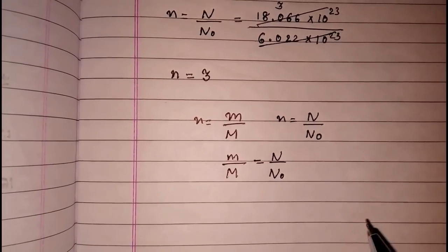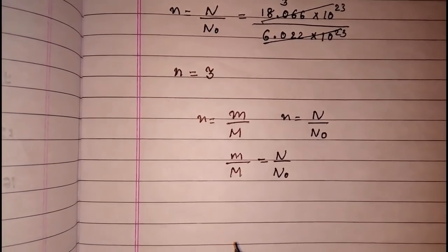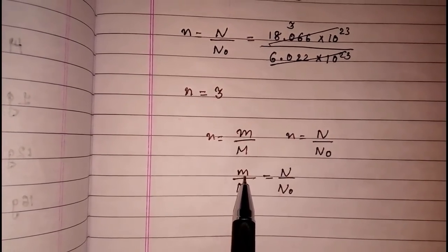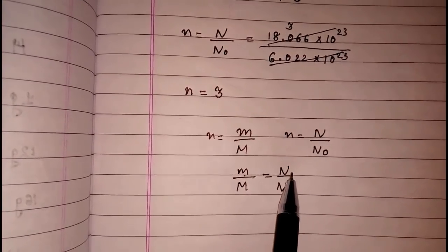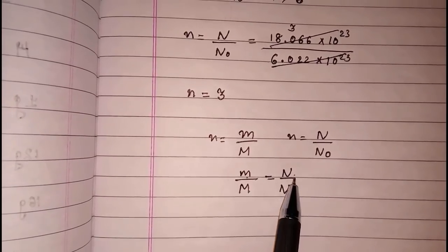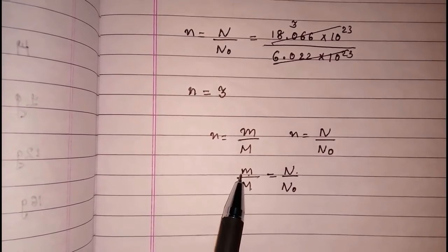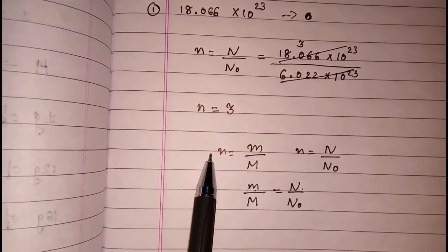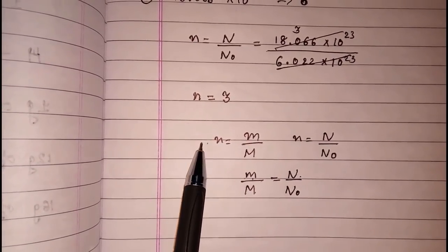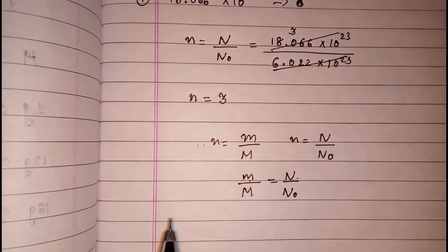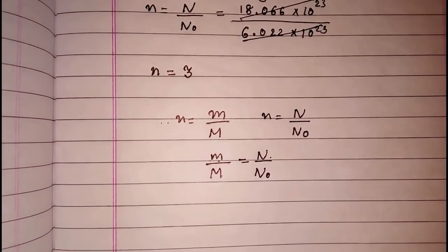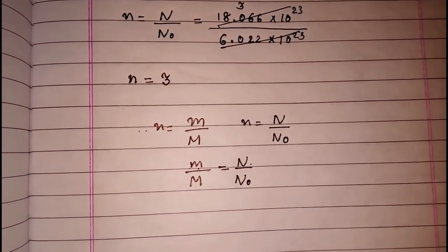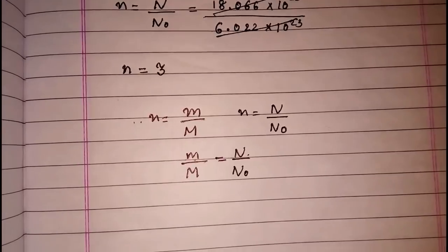Whenever you get this type of problem, first make a list of all the numbers you are given, and automatically you will find the number which is not given. If they give you mass in grams, you can find the number of atoms. If they give you atoms, you can find the mass. And if they give you any of these and ask for number of moles, you can find that too. If you like my video, please subscribe to my channel and click the like button below. Thank you.